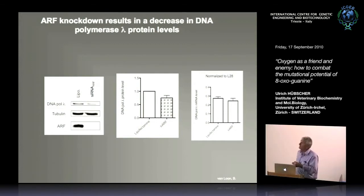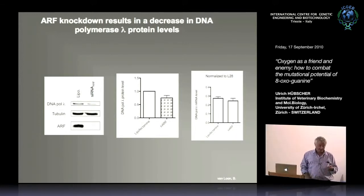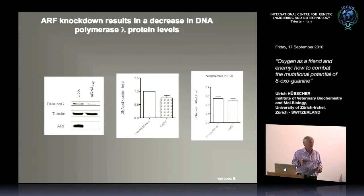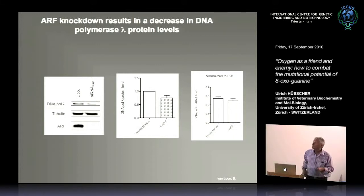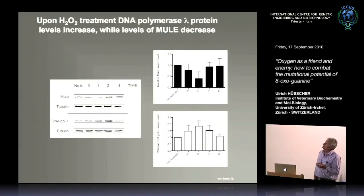We then knocked down ARF, which is an inhibitor of MULE. MULE E3 ligase is inactivated by ARF, and ARF dissociates from MULE upon genotoxic stress — so when a cell is under genotoxic stress, ARF is removed, MULE becomes active. Knocking down ARF causes a decrease in pol lambda, because MULE is now active and degrades pol lambda. When we treat cells with H2O2, we see a clear decrease in MULE levels and a corresponding increase in pol lambda.